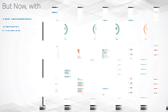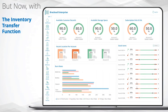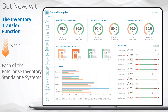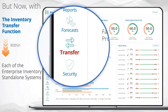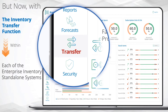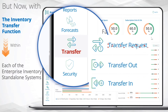But now, with the inventory transfer function, within each of the enterprise inventory standalone systems, there'll be a new icon under the menu labeled Transfer. This icon will have three tabs: Transfer Requests, Transfer Out, and Transfer In.